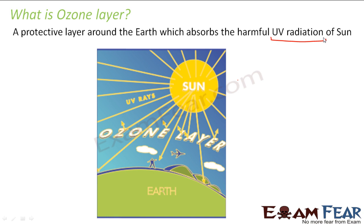UV radiation can cause harm to the cells of living organisms. For example, if a human being's skin is exposed to ultraviolet radiation for a longer time, there is a probability it can cause skin cancer and ultimately kill that person. Ultraviolet radiation has harmful effects for all life on earth. The ozone layer acts like a soldier providing protection to our house — the house being the earth and the soldier being the ozone layer.